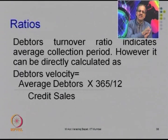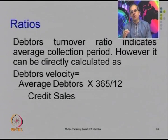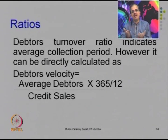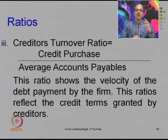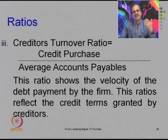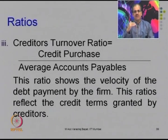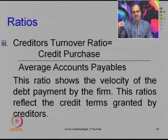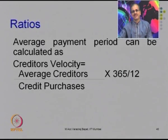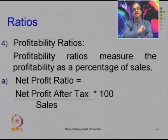Similar to inventory turnover ratio, there is the debtors turnover ratio, also known as receivables turnover ratio, which relates sales to average accounts receivable. This ratio can be converted into debtors velocity — debtors upon sales multiplied by 365 (or 12 for months) — to find how many days of receivables an entity has. Every entity tries to reduce debtors velocity because the company wants to recover receivables as fast as possible. Similarly, creditors turnover relates credit purchases to accounts payable, and can be converted into creditors velocity — the number of credit days obtained from suppliers.